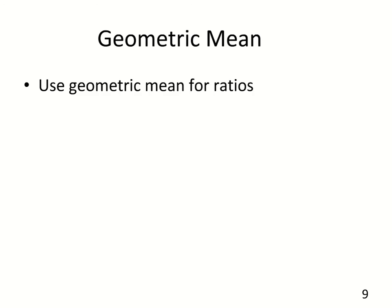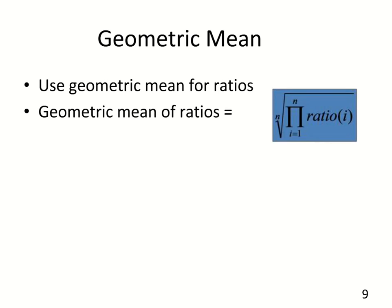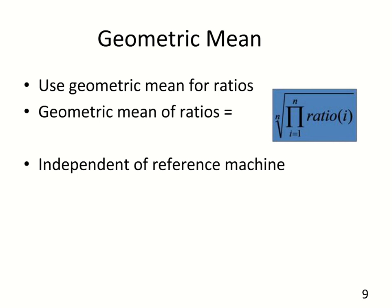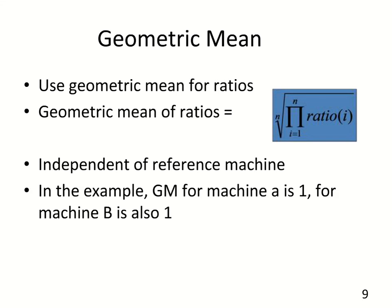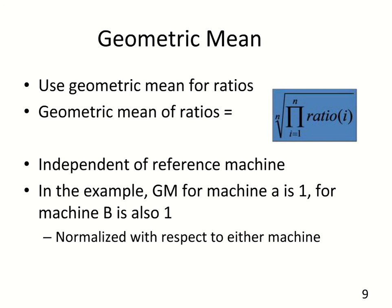What you want to do instead is use the geometric mean whenever dealing with ratios — things like speedups. The geometric mean is defined as the nth root of the product of all of the ratios in the set you're averaging. It ends up being independent of the reference machine used to compute the ratios, which is a nice property. In the previous example, the geometric mean for both machine A and machine B is 1, normalized with respect to either machine — a result that is at least somewhat meaningful.